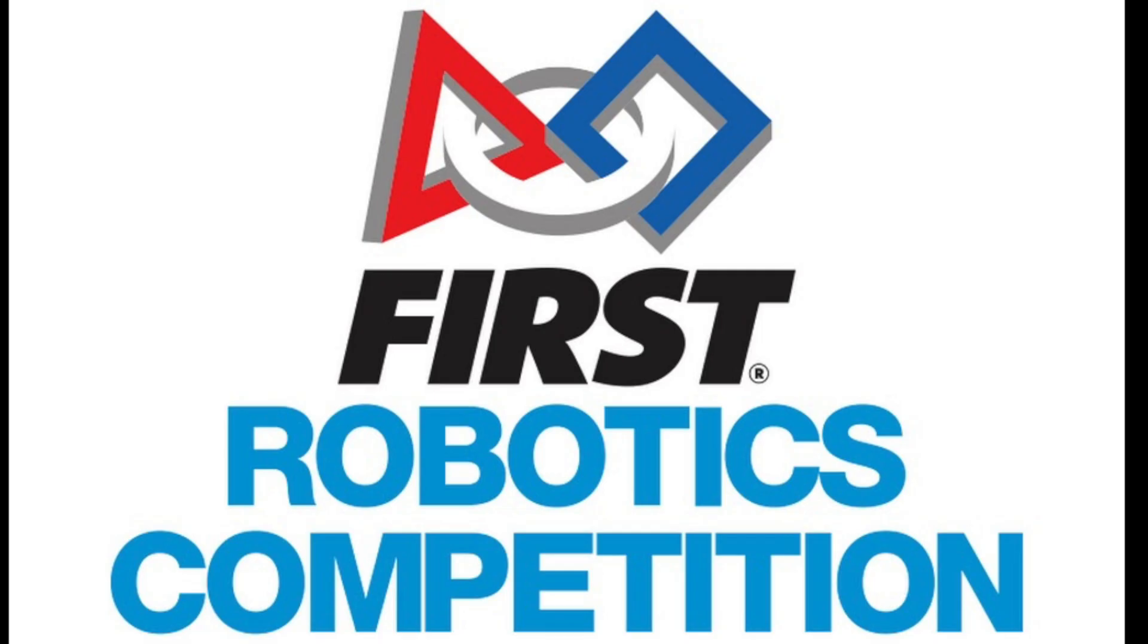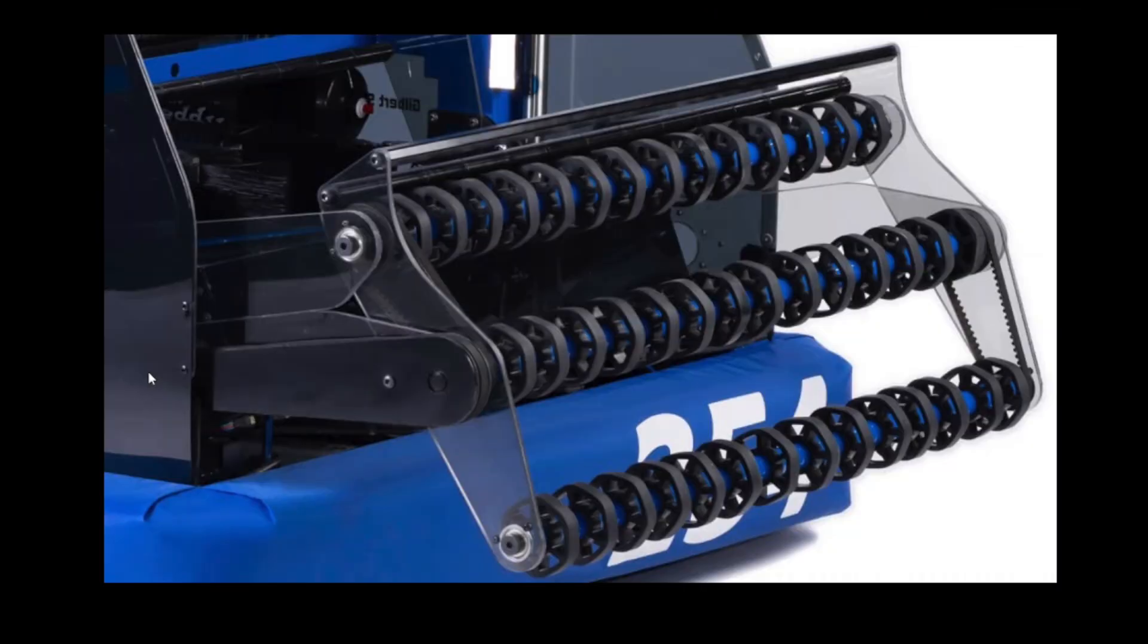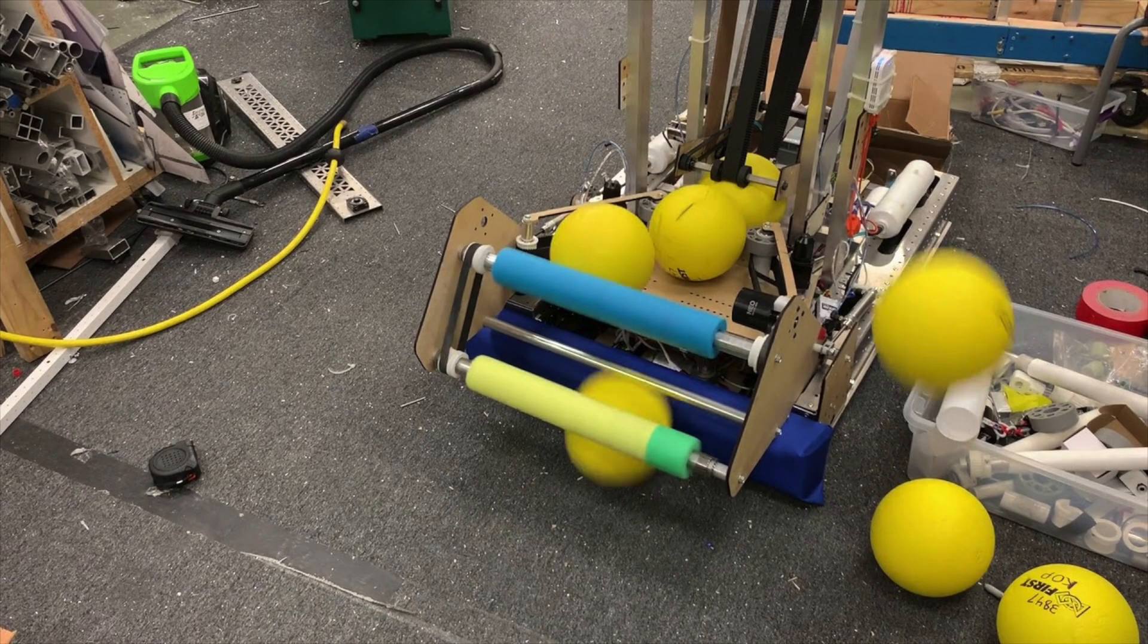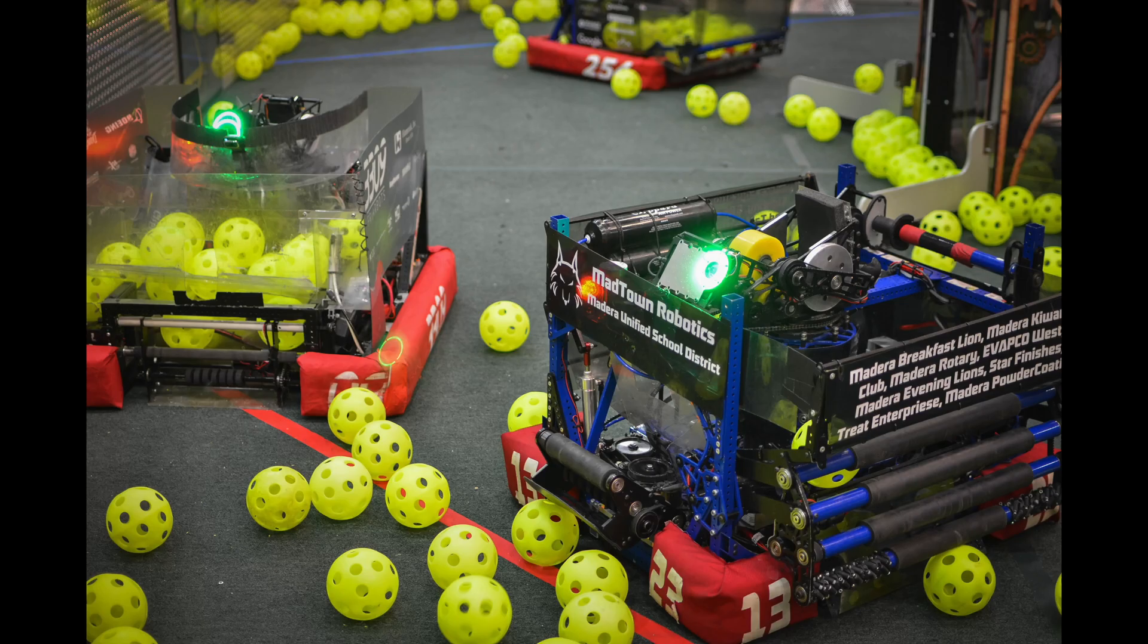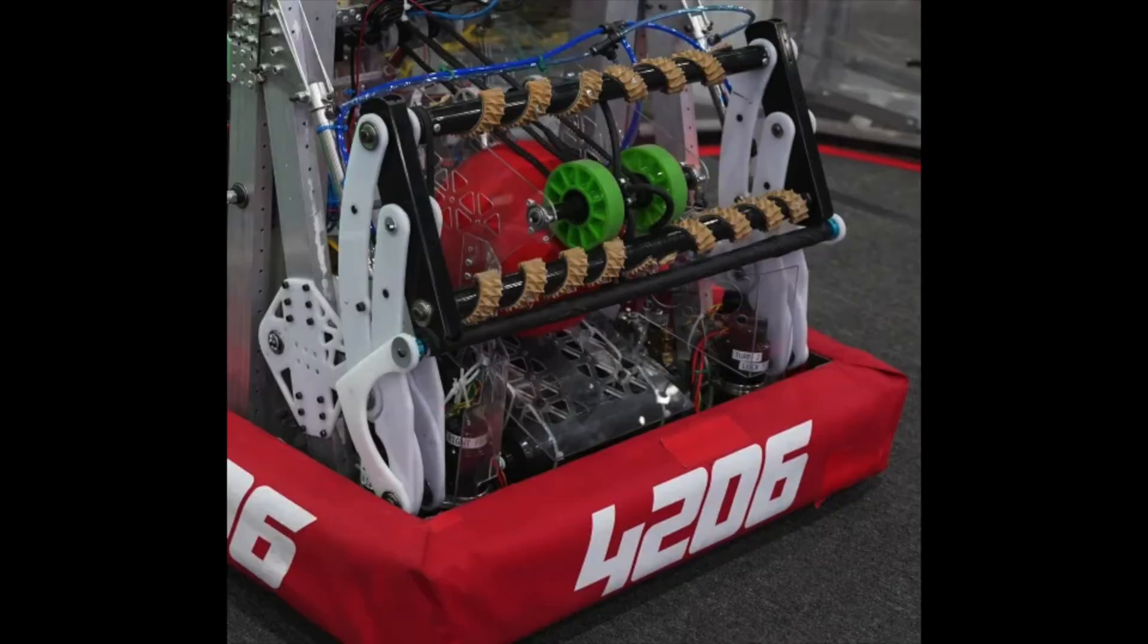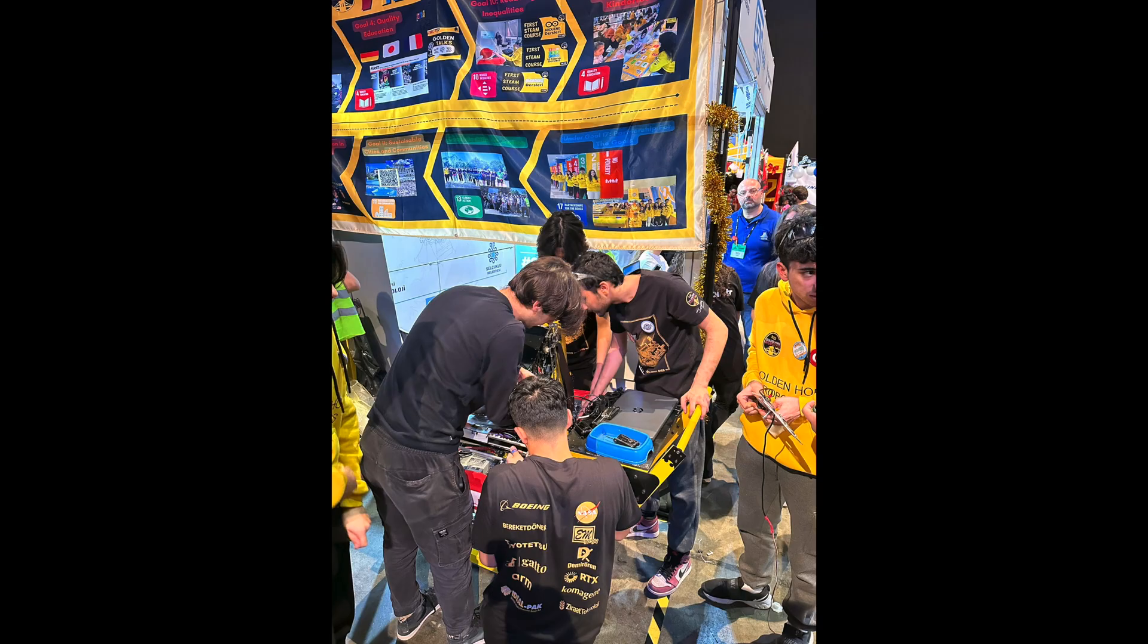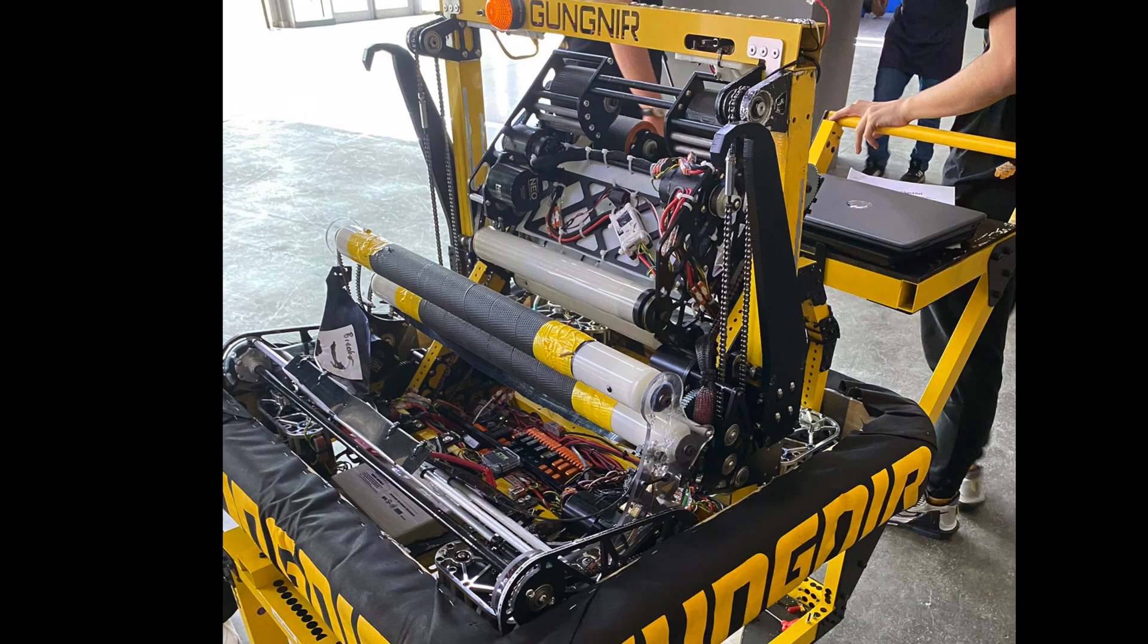In FRC, some things never change, and the most notable among them is the presence of an intake mechanism. As the first part of a robot to contact game pieces, the intake determines a significant portion of the robot's capabilities. The intake in Gungnir was the most redesigned and problematic part of the robot. This is the untold story behind the intake of Gungnir.